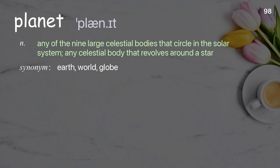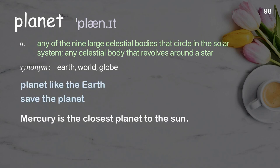Planet: any of the large celestial bodies that circle in the solar system; any celestial body that revolves around a star. Examples: planet like the Earth, save the planet. Mercury is the closest planet to the sun.